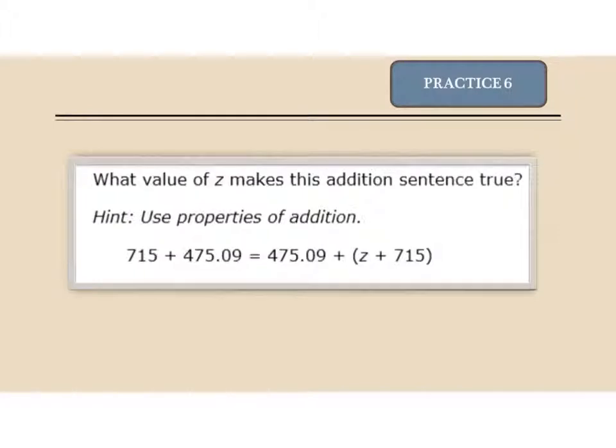Practice 6. What value of z makes this addition sentence true? Notice there are only two numbers on the left, three on the right. What would I have to add to these to make, to get the same answer? Hint, think of the identity property.